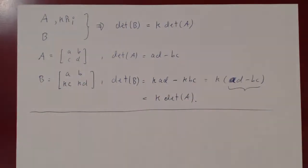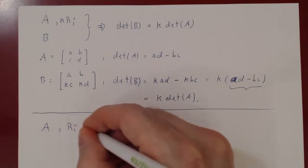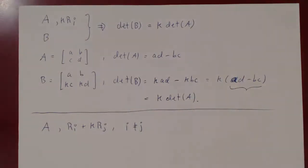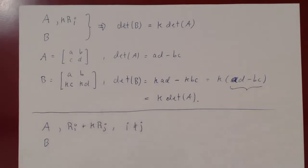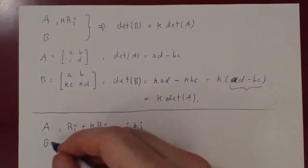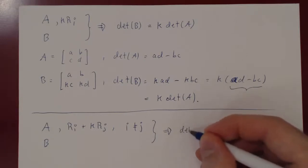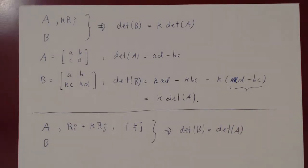The third type of row operation — and this one is really neat — is: add to row i some multiple of row j, where i ≠ j. Obtain matrix B and ask how the determinant of B compares to the determinant of A. What's really neat is it doesn't change: the determinant of B is just the determinant of A. This is the nicest type of row operation, because every time you apply it to introduce zeros, the determinant stays unchanged.